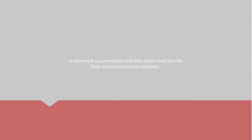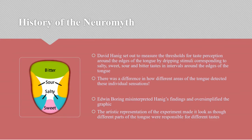A neuromyth is a commonly held false belief about how the brain and nervous system functions. This neuromyth first came about in Germany in 1901, when scientist David Hany set out to measure the thresholds for taste perception around the edges of the tongue by dripping stimuli corresponding to salty, sweet, sour, and bitter tastes at intervals around the edges of the tongue. What he found was that there was a difference in how different areas of the tongue detected these individual sensations.